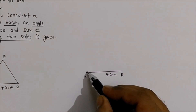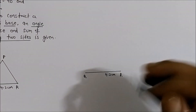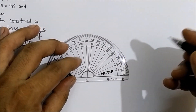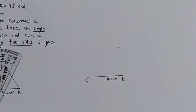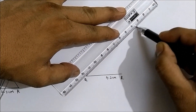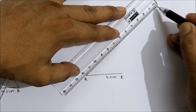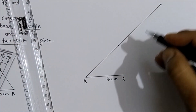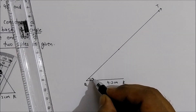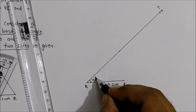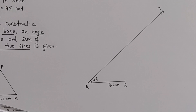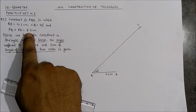Now at point Q we will make one ray making an angle of 40 degrees. We can mark a point here as T — ray QT — and this angle is 40 degrees.